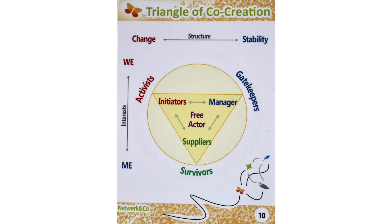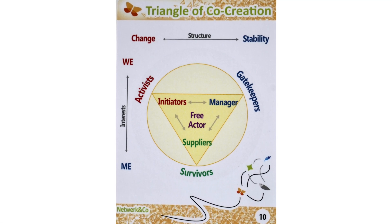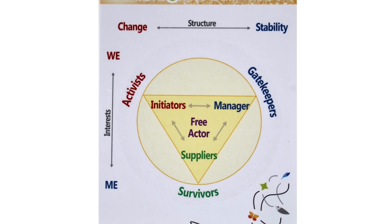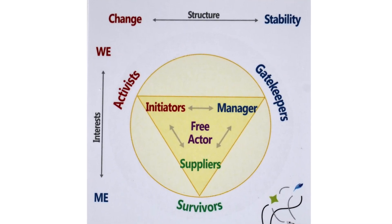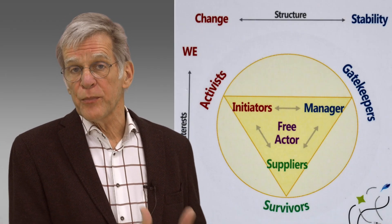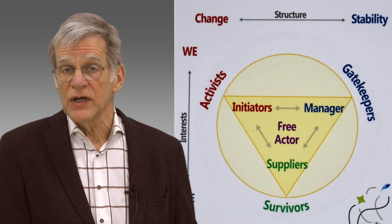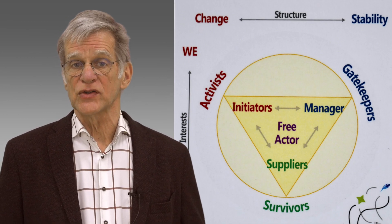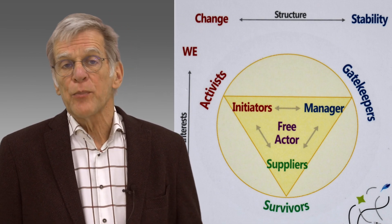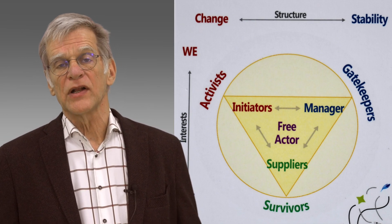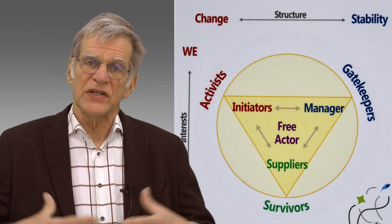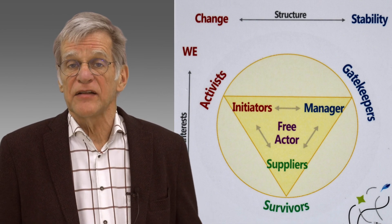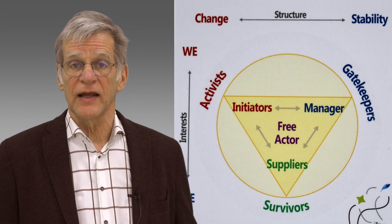Then I would like to talk about the triangle of co-creation. In any process, in any network, people take different positions — some positions contribute to co-creation and others do not. Reflecting on what position people take and what might be needed to get them into a contributing position is what this triangle is all about. For example, you need people who really pull the initiative forward, people who take a management position to create the possibilities, and people who give it the hands and feet — bringing in their expertise.